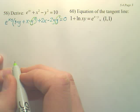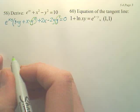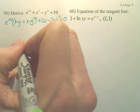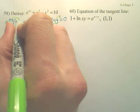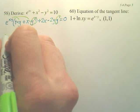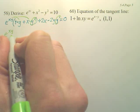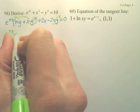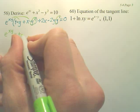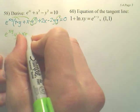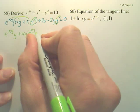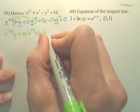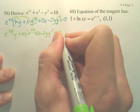In order to do that, my first take would probably be—there's multiple options here—I'm going to distribute first. e to the xy times y plus x times y prime times e to the xy, and then plus 2x minus 2y times y prime equals 0.